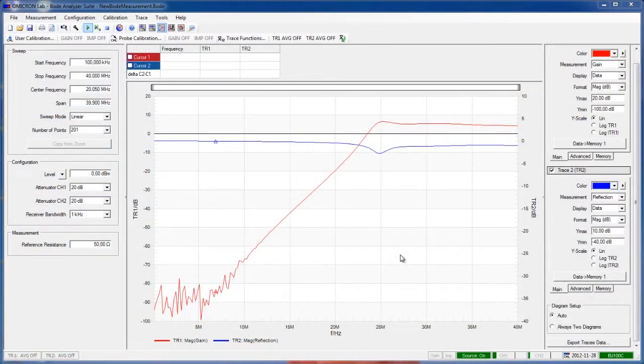To measure the scattered parameters of the device under test, we need to make sure that the Bode 100 is set up correctly.